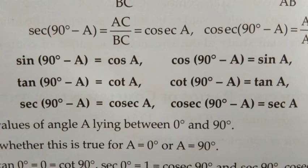The formulas are: sin(90° - A) = cos A, tan(90° - A) = cot A, sec(90° - A) = cosec A. The angle A lies between 0° and 90°. For example, sin(90° - 30°) = cos 30°.